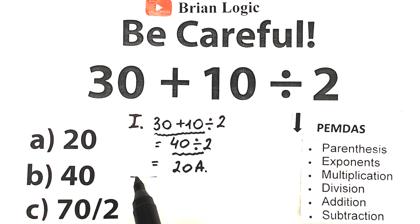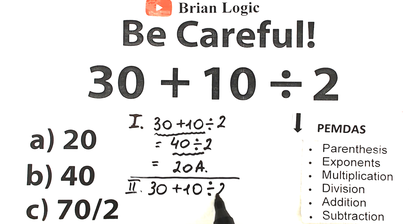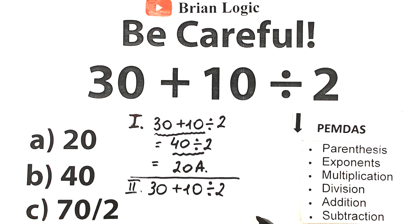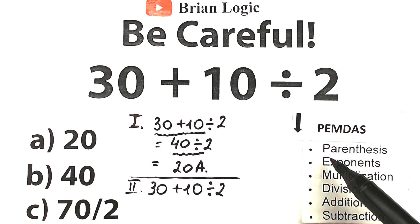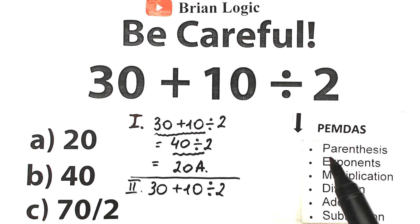Now let's write the second interpretation — solving according to PEMDAS. We have 30 plus 10 divided by 2. Let's scan what elements we have, because parentheses have the highest priority, then exponents, then multiplication and division, and addition and subtraction have the lowest priority. So first step: parentheses. Let's scan — I don't see any parentheses, so we just skip this part.